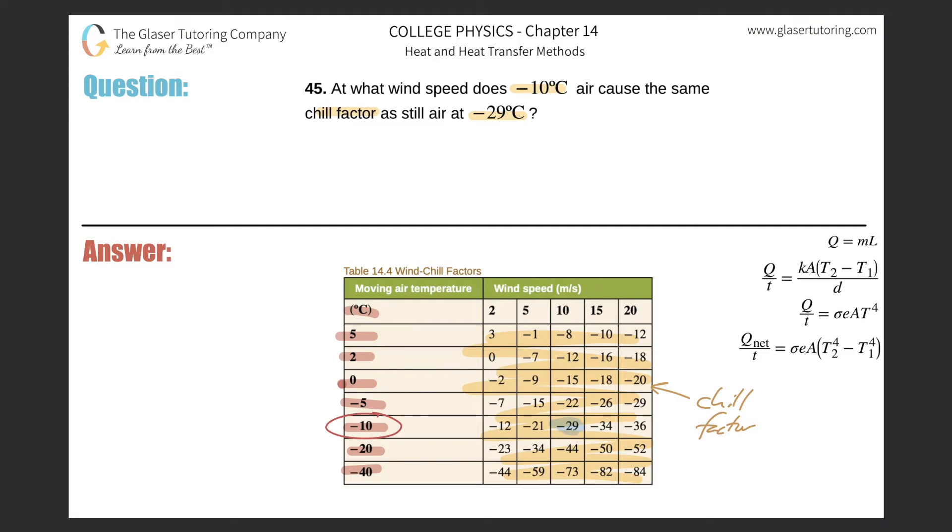And then the top part here correlates with the wind speed at which that chill factor occurs. So basically the answer to this question is 10 meters per second.